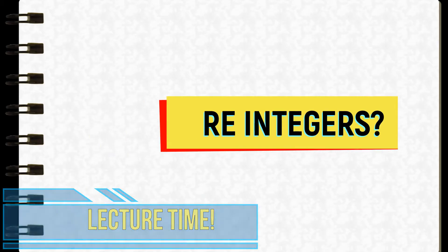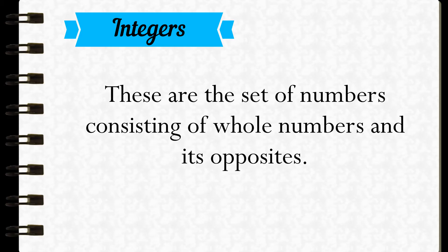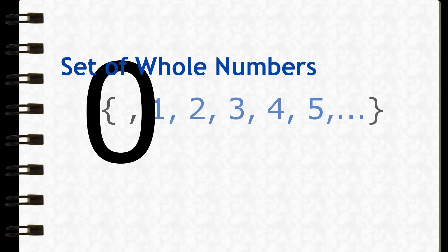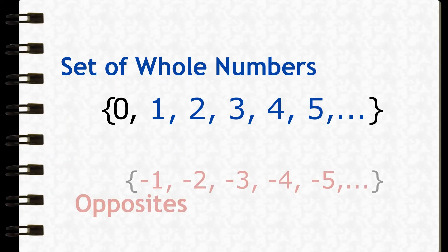So what are integers? Integers are the set of numbers consisting of whole numbers and its opposites. Remember that the set of whole numbers starts at zero, followed by the counting numbers, and the opposites, we just put a dash beside it.